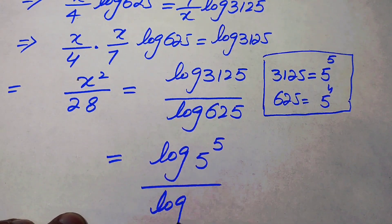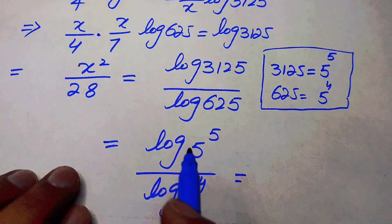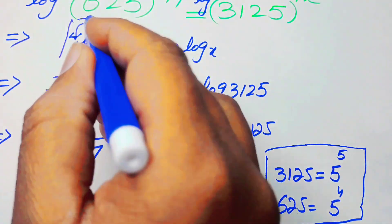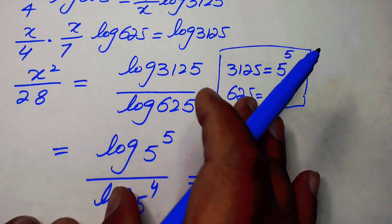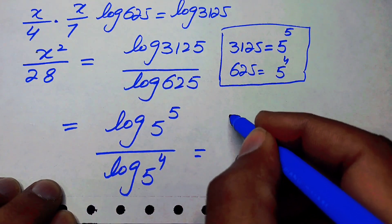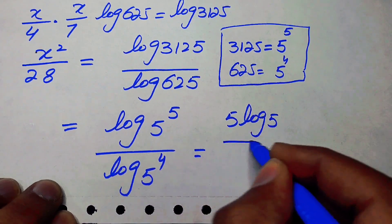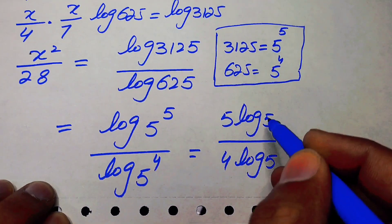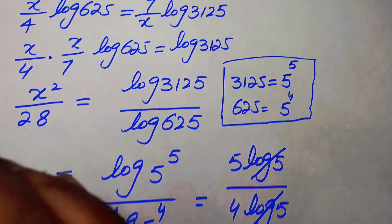We apply the logarithmic power property again, bringing the exponents in front, which gives us 5 log 5 over 4 log 5. The log 5 terms cancel, leaving 5 over 4.